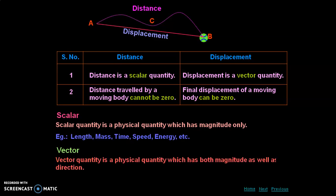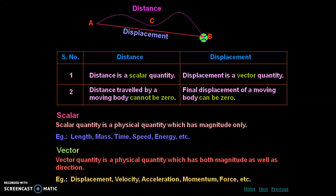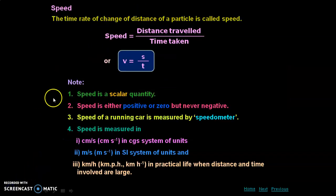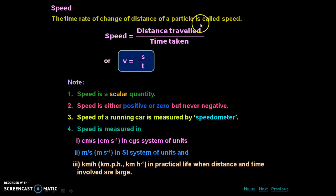Speed is a scalar quantity. Speed is defined as distance upon time — that is, the time rate of change of distance of a particle. Speed is always positive or zero; it is never negative. The units of speed are meters per second.